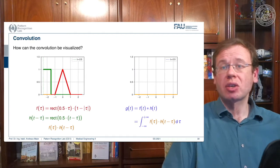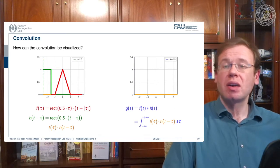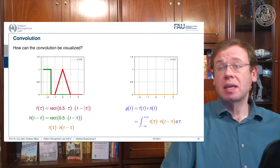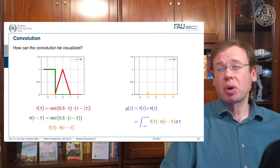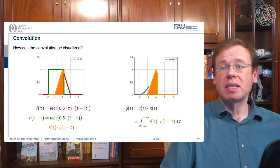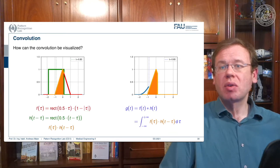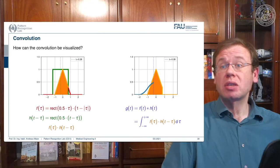Let's look at 1D convolution with our example of the rectangular and triangular functions. We shift the two against each other and compute the weighted integral over the two functions. If I shift them so they don't overlap, the integral is obviously zero. As I shift more, they start touching and then overlapping. I multiply them point-wise and compute the integral. You can see on the right-hand side the blue output function slightly increasing as the overlap increases.